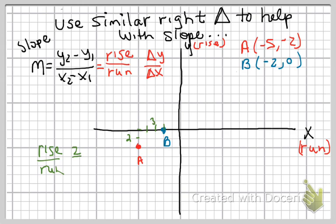So what I'm going to do is I'm going to go up one, two, so I went up two, then I go over one, two, three and went over three. So my rise was two, my run was three.